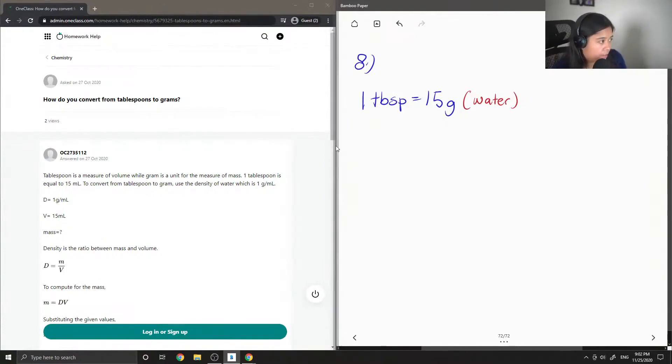So the question asks, how do you convert from tablespoons to grams? Let's just have an example.